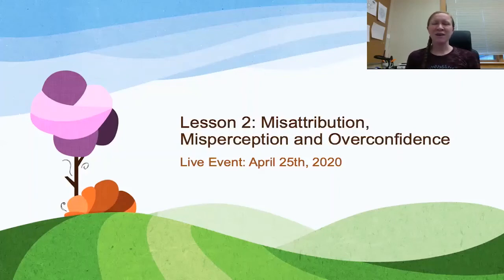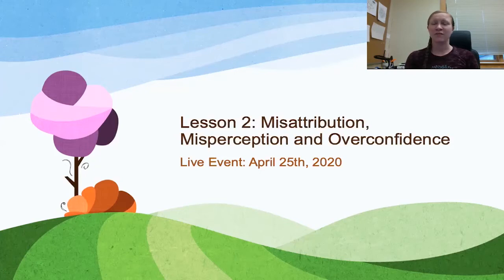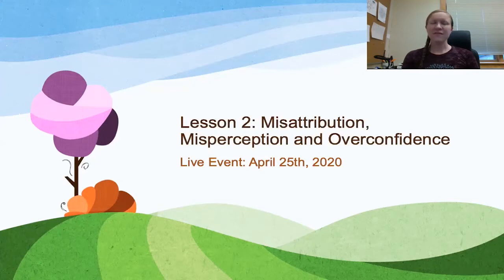Good morning and welcome. It is Abby from Action for a Peaceful World, and this is Course 2, Lesson 2, where we are going to be talking about misattribution, misperception, and overconfidence — three categories of cognitive biases that impact our decision-making.